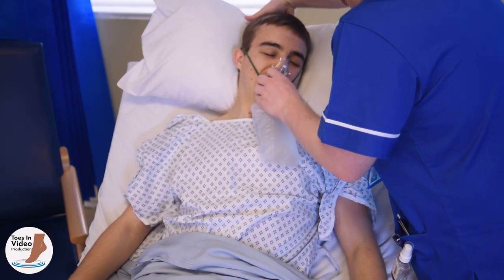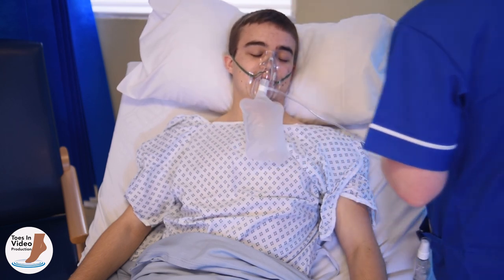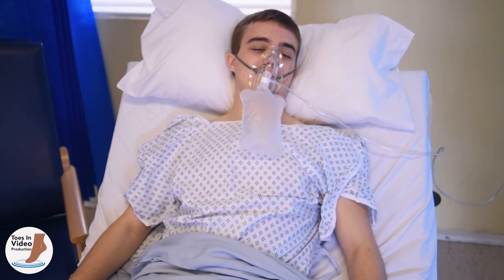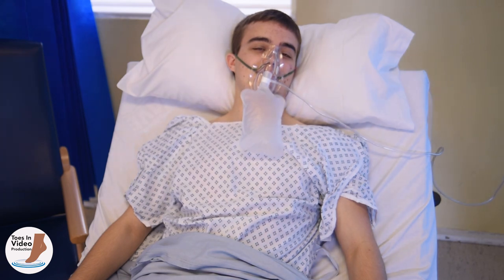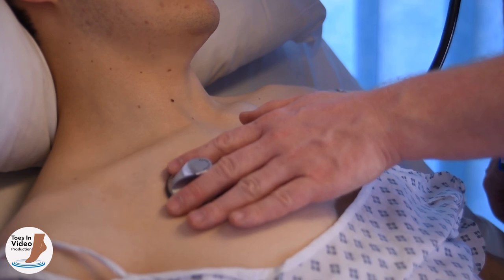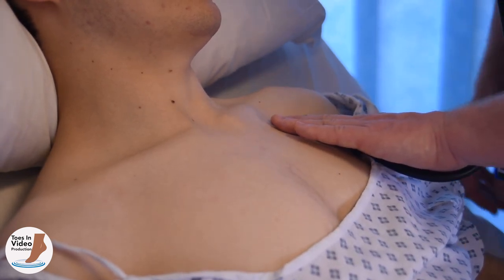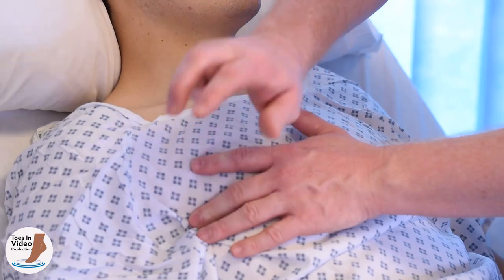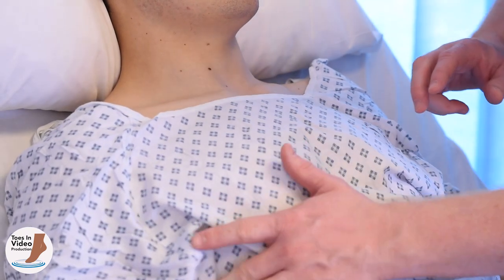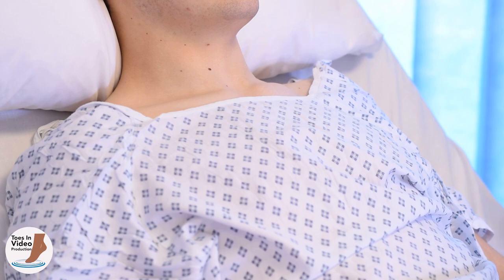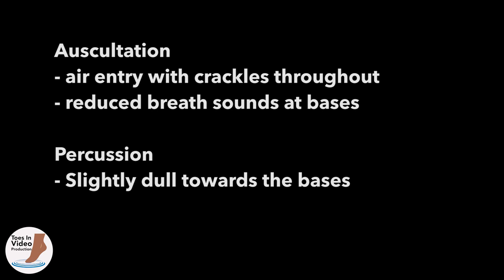John is using accessory muscles to help him breathe and is struggling to maintain his saturation. The nurse has administered high flow oxygen via a non-rebreather mask to improve John's oxygen saturations. He will need to re-assess this observation and titrate the amount of oxygen delivered to the effect this has on his monitored oxygen levels. Auscultation using a stethoscope listens for air entry, crackles, wheezes or other added sounds. Percussion of the chest observes for areas of hyper-resonance suggestive of air in the pleural cavity, or dullness suggestive of fluid or consolidation. Auscultation reveals air entry with crackles throughout with reduced breath sounds at the bases, and the percussion note is slightly dulled towards the bases.